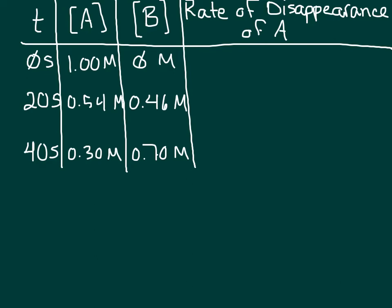If we look at some sample data for this reaction, you can see that as time progresses, A, the reactant is consumed, so its concentration decreases, while B is produced, so its concentration increases.